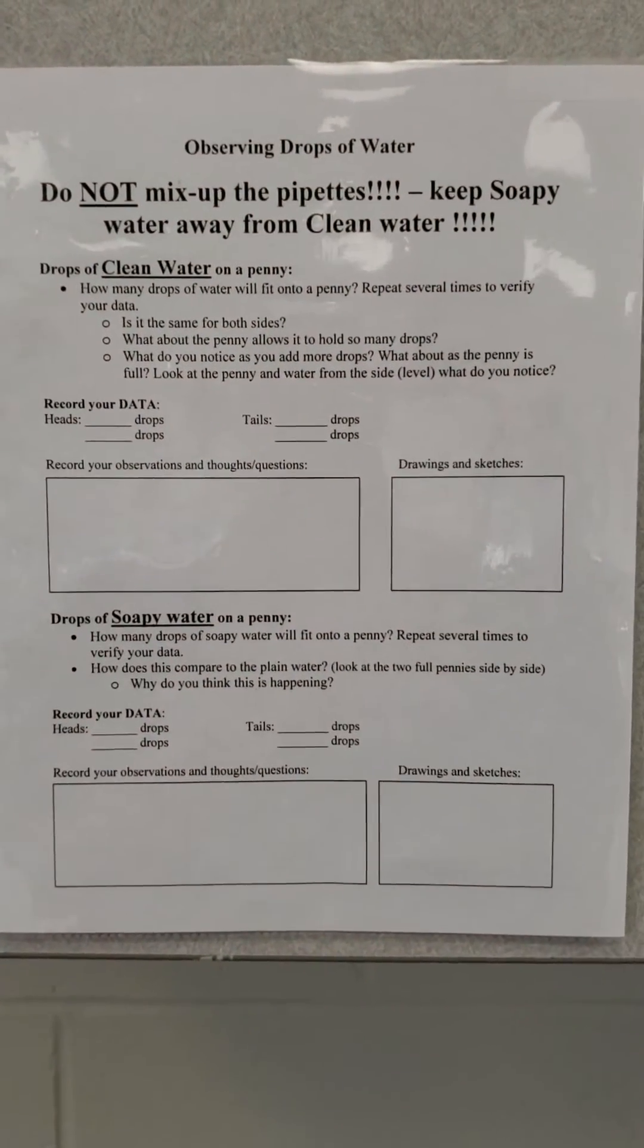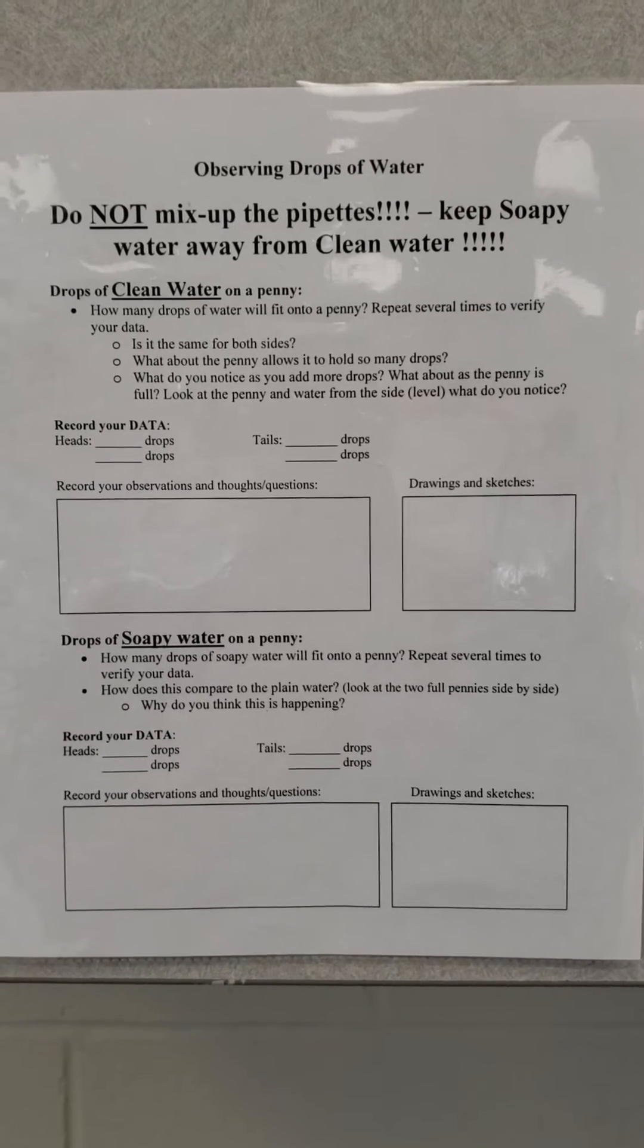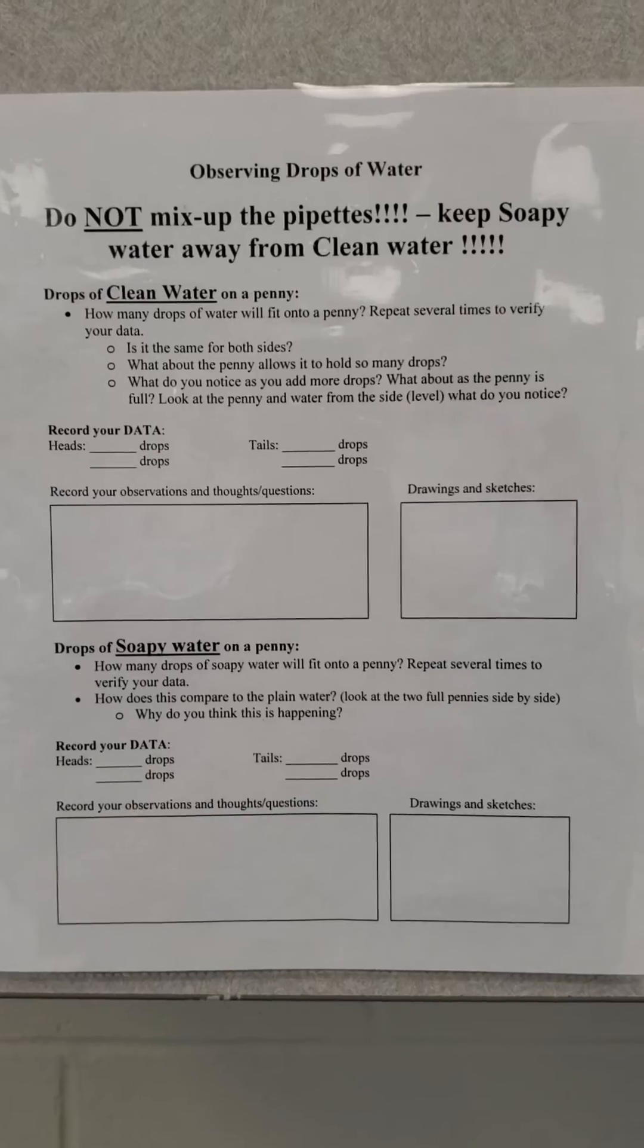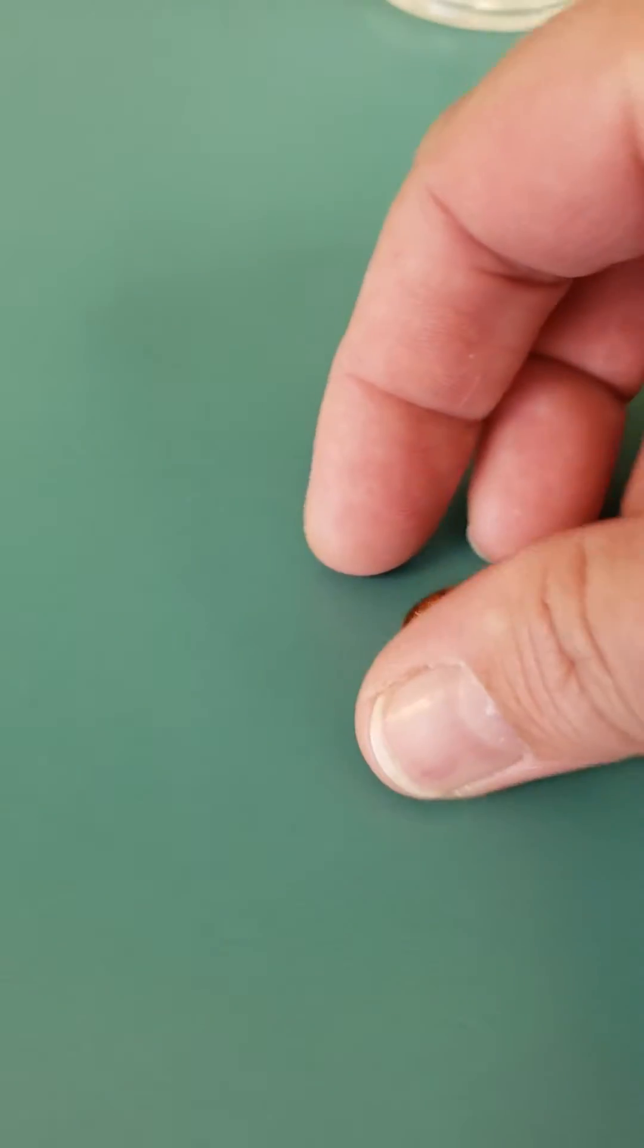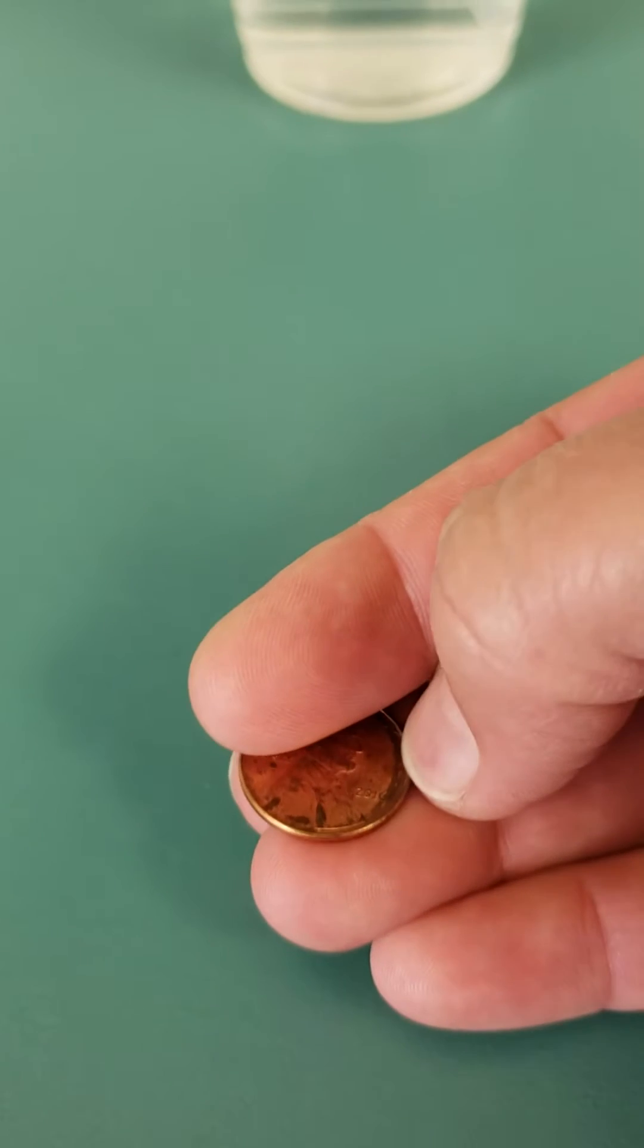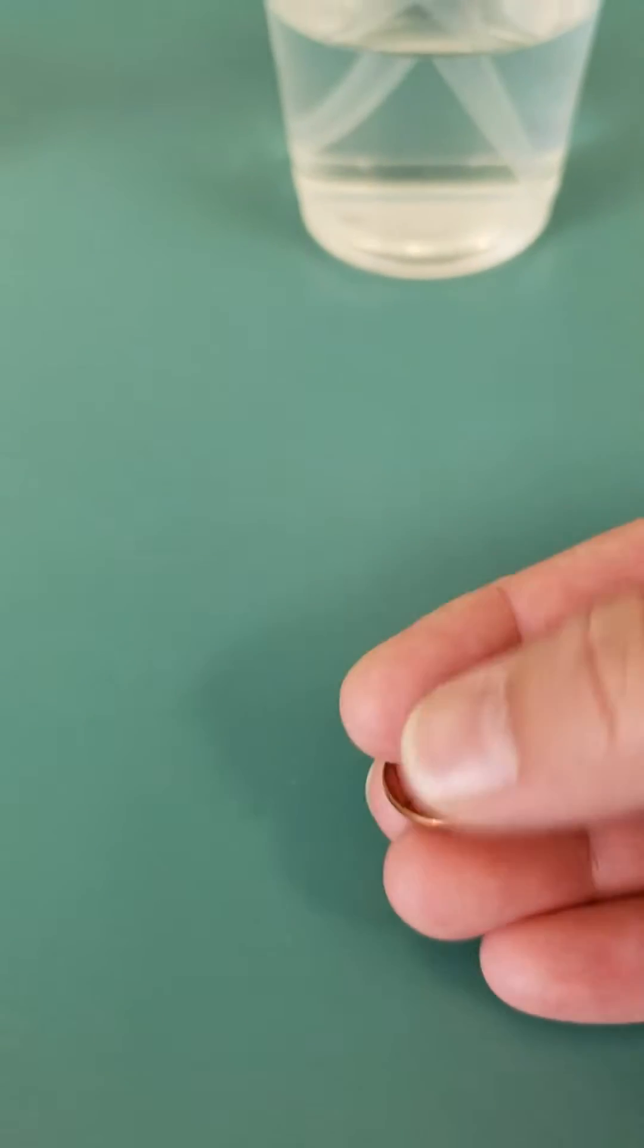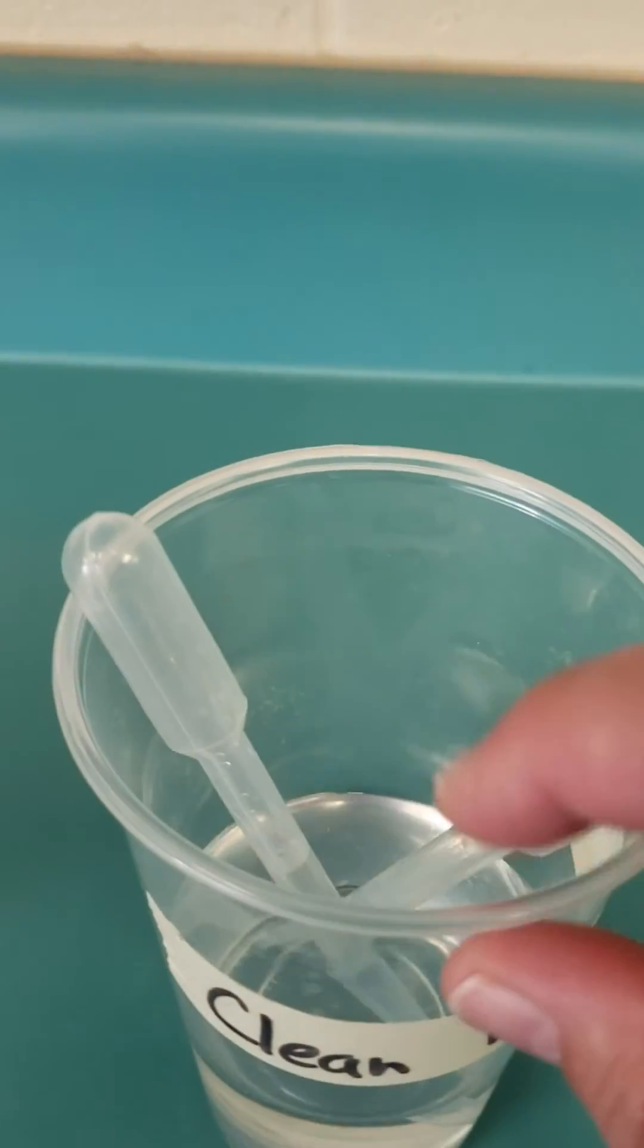In this third station we're going to be observing clean water and soapy water on a penny. Let's look at our penny here. We notice that if we look at it and feel it, there's a little bit of a rim on the edge of our penny, and that's very similar to the rim that's on the edge of a cup.